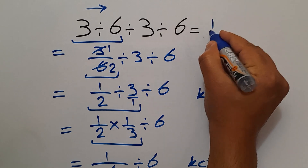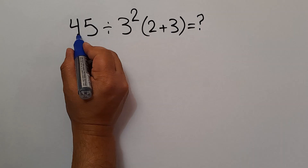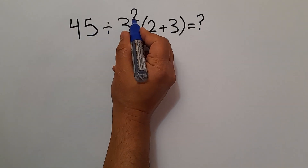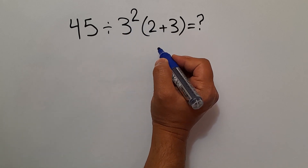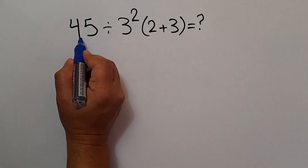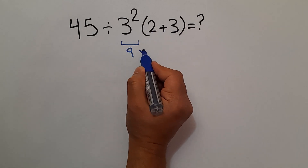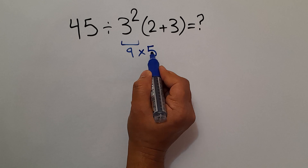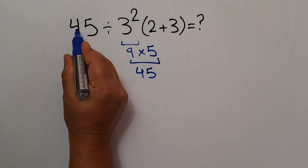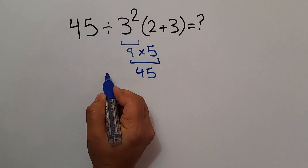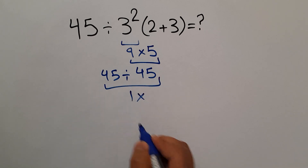Our next problem is: 45 divided by 3 squared times (2 plus 3). Are you ready to solve? Let's go ahead and get started. 3 squared gives us 9, and 2 plus 3 equals 5. 9 times 5 equals 45, and 45 divided by 45 equals 1 — but this answer is not correct.